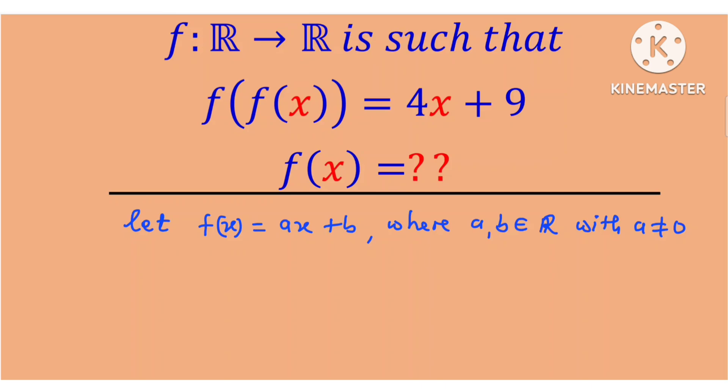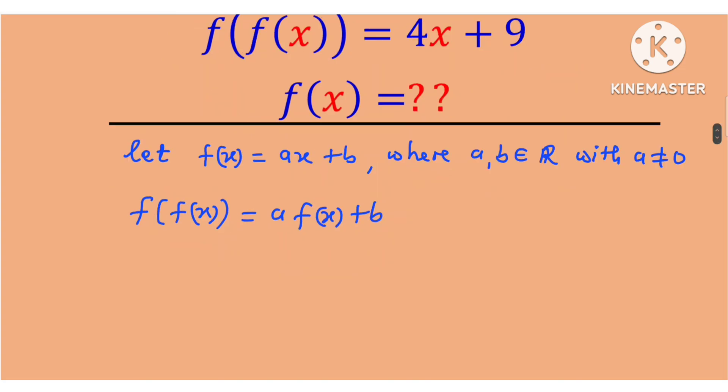And if we compose f with itself, we are going to obtain f of f of x, which is equal to a multiplied by f of x plus b. And this is equal to a times ax plus b plus b, which gives a squared x plus ab plus b.